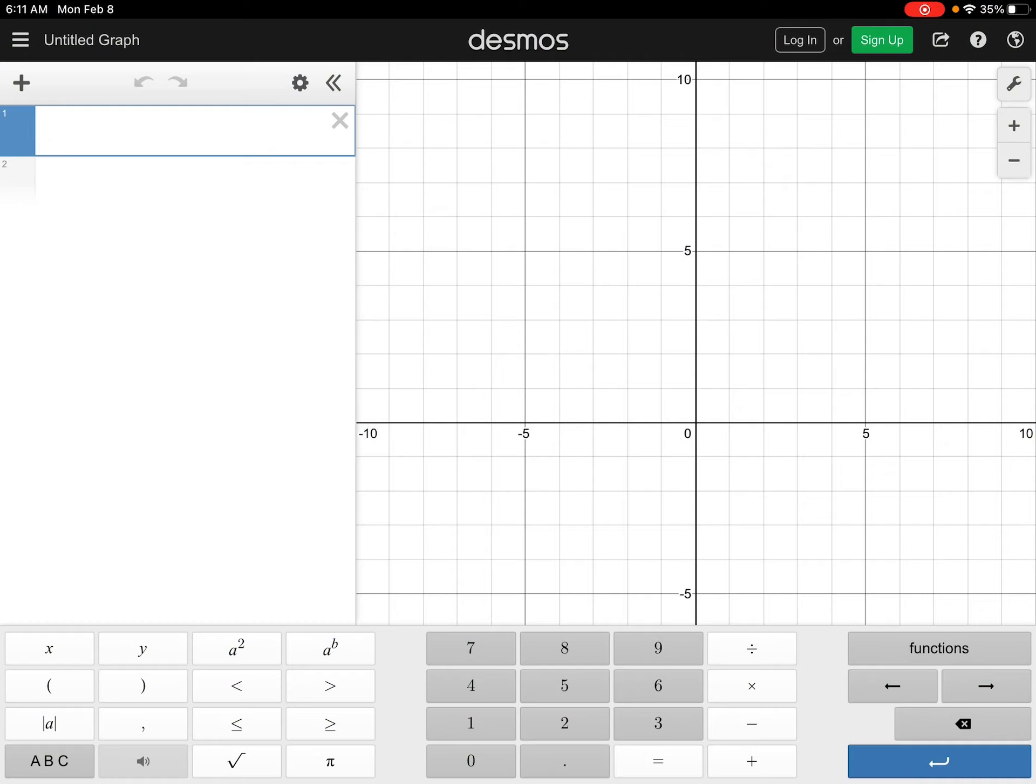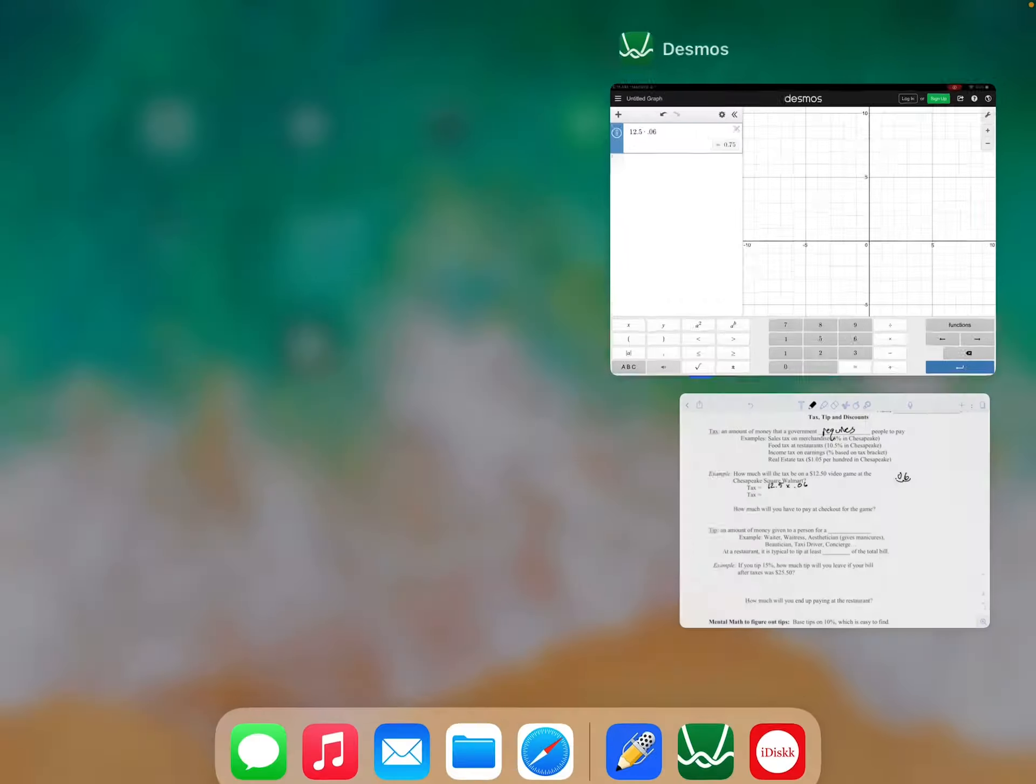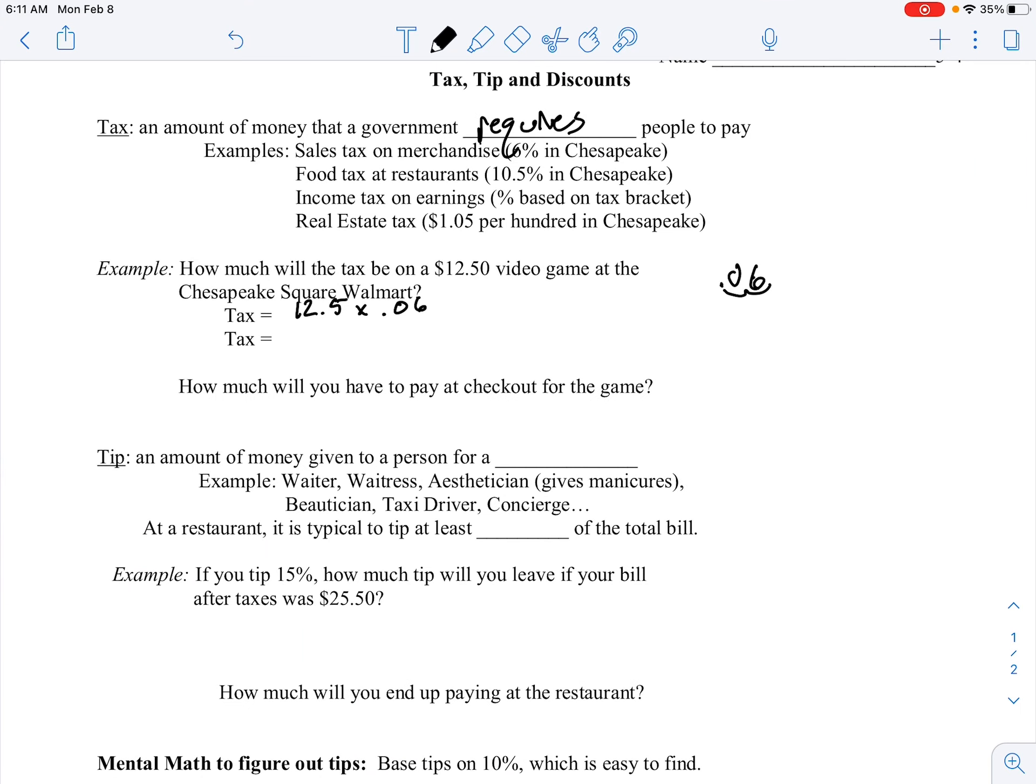So I'm going to open up a calculator real quick. That was $12.50 times 0.06. And that's going to be 75 cents of sales tax for that. So the tax will be 75 cents.